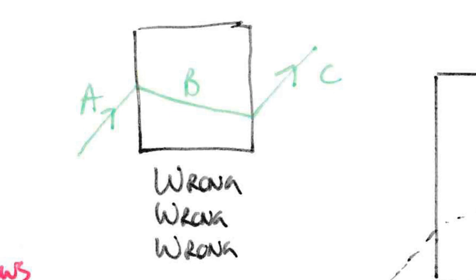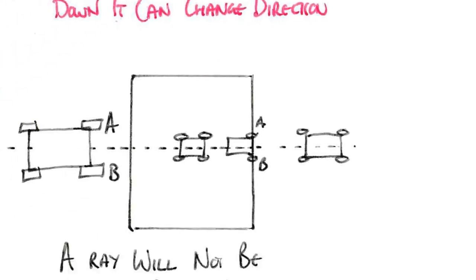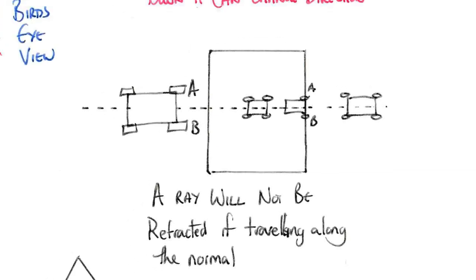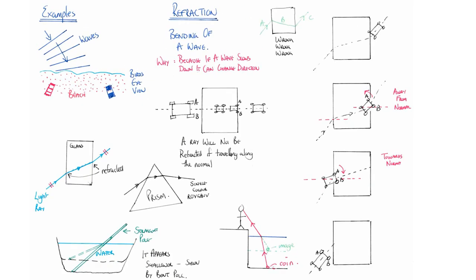An exception to this bending principle is if you fire the ray at 90 degrees to the block, so along the normal. What actually happens is that A and B hit the mud at the same time, so they both slow down at the same time and that keeps them going in a straight line. When it leaves the glass block, A and B both speed up at the same time so it keeps going in a straight line. So along the normal it does not refract. That's a quick summary of refraction.